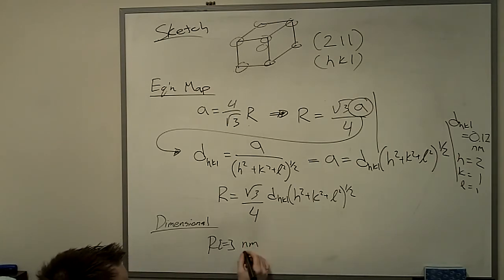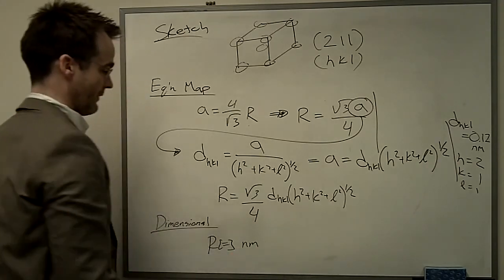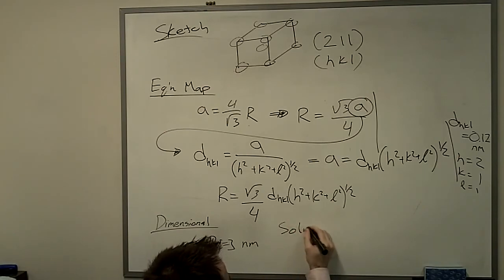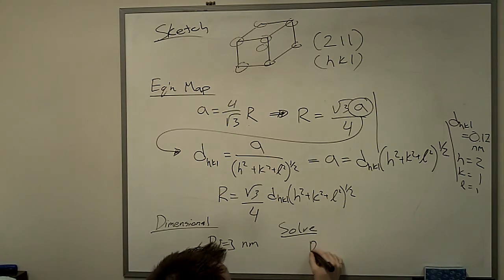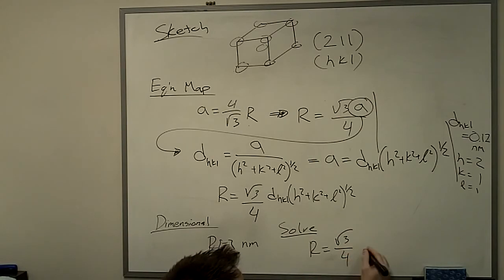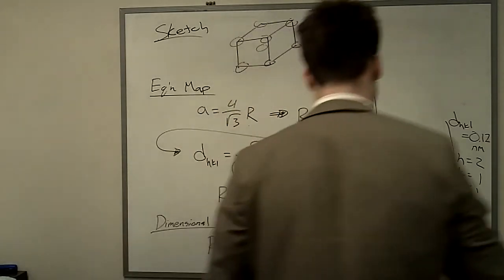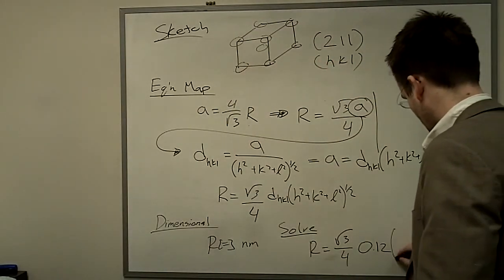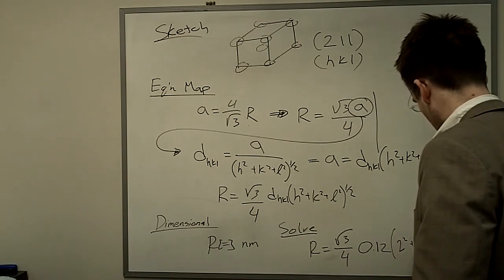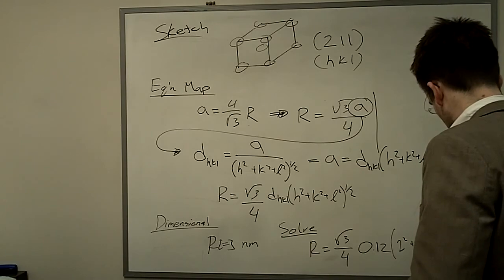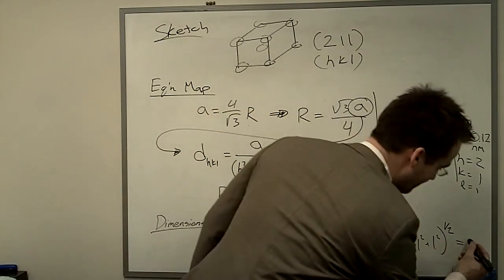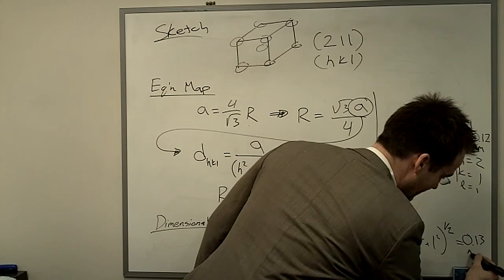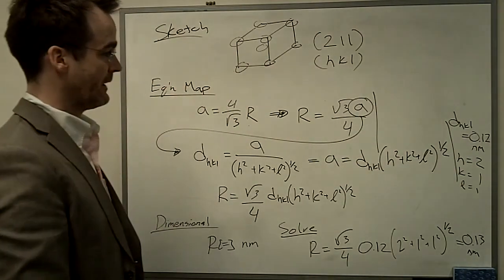Miller indices are dimensionless as well. So we've got our final answer in nanometers. And if you work that out, you're going to get 0.13 nanometers. So that's our atomic radius.